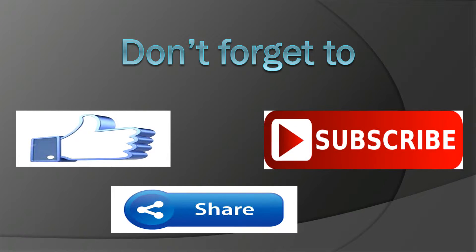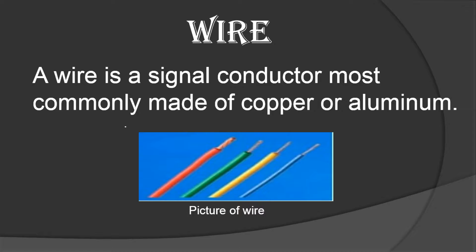If you want educational and entertainment related videos, don't forget to subscribe to this channel and share this video. If you like this video, give it a thumbs up. Now, before getting into the chapter, we have to know what is wire. We can simply say a wire is a path of energy from one end to another end, or a wire is a single conductor, most commonly made up of conducting materials like copper or aluminum, as shown in the picture below.